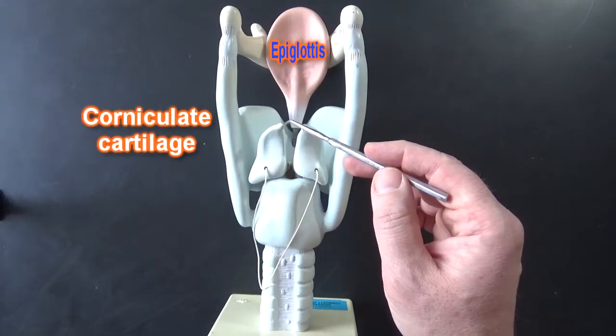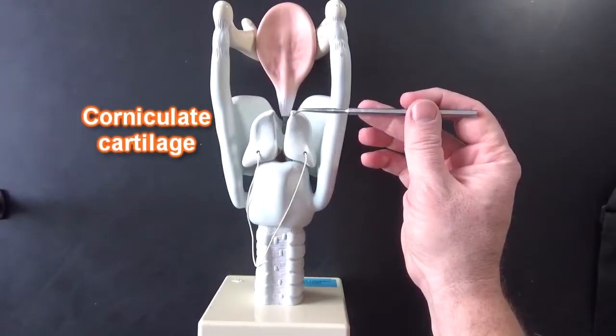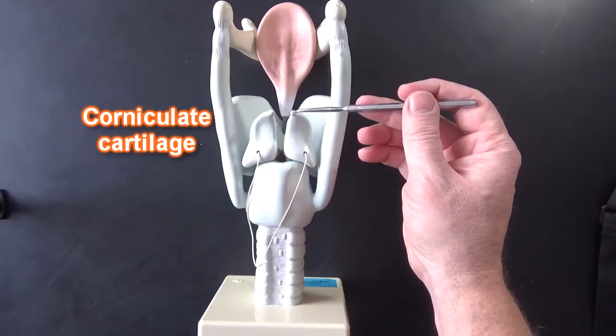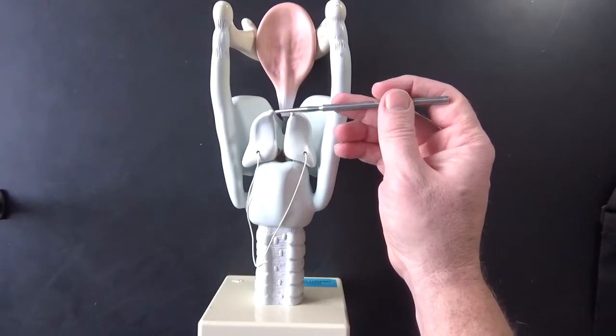These would be corniculate cartilages up on top of the arytenoid cartilages. These little corniculate cartilages to me look like little pieces of corn so that's how I remember them.